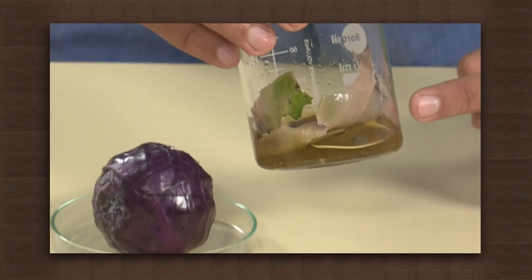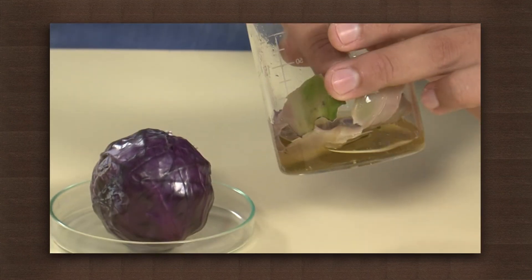So red cabbage juice can be used as an acid base indicator. Do you know of other things that can be used as acid base indicators?